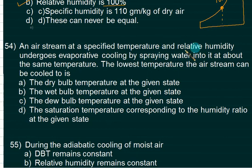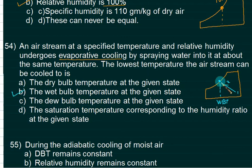Air stream at a specified temperature and RH undergoes evaporative cooling. Evaporative cooling is desert cooler by spraying water into it at the same temperature. The lowest temperature the air stream can be cooled to is: first of all, the process will be like this. Does this process is represented by this line? And if you continue this process, can you attend this point? Is this point the same as the wet bulb temperature? For this process 1 and 2 on this line. So he says that the lowest temperature the air can be cooled to is the dry bulb given state or wet bulb temperature at the given state or dew point temperature. So is it wet bulb? This temperature is wet bulb. Dew point is this. Option B is correct.